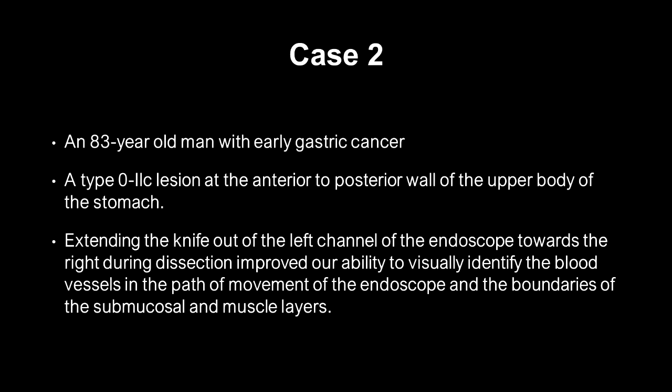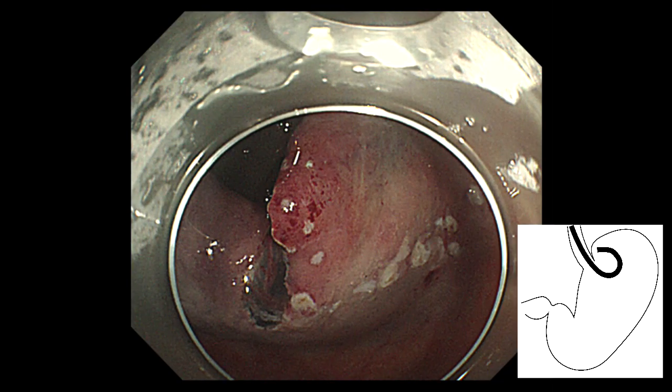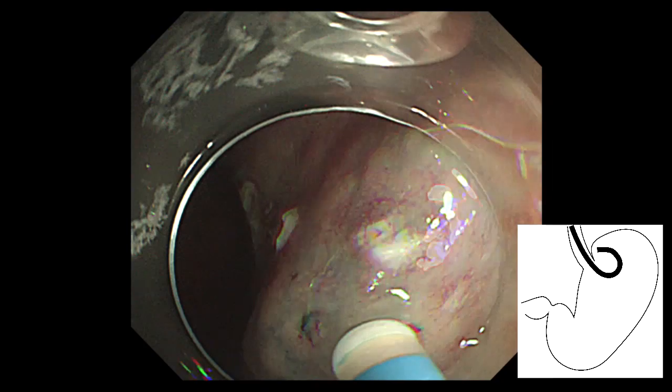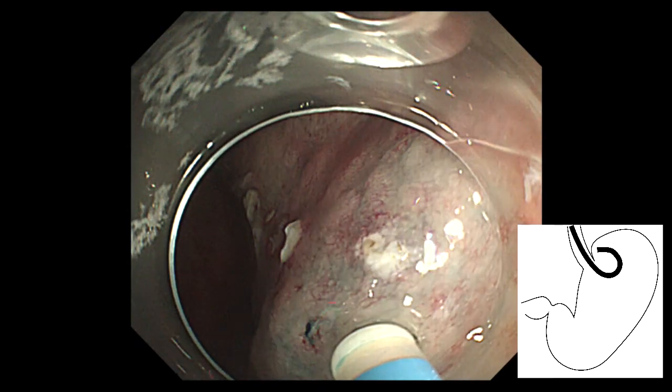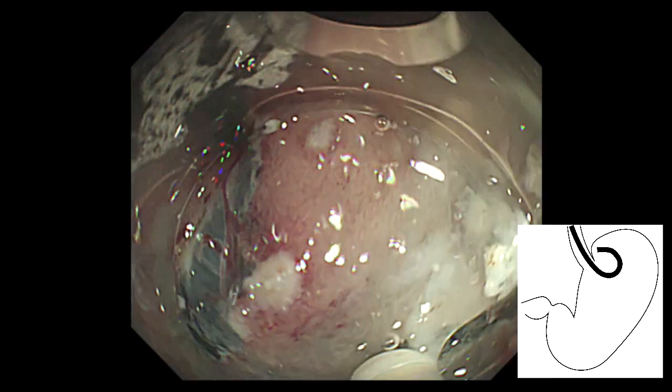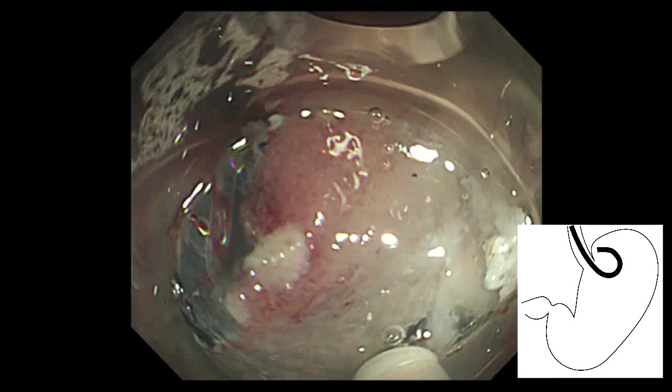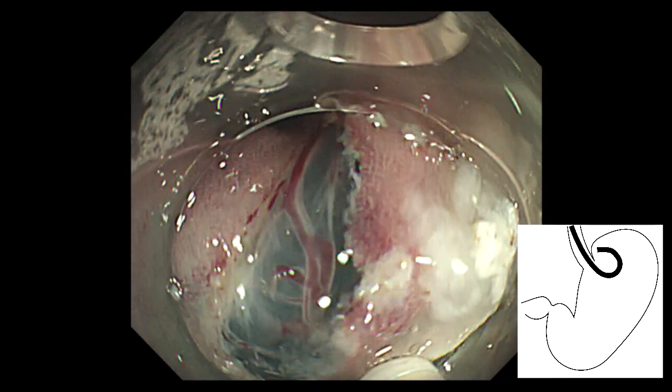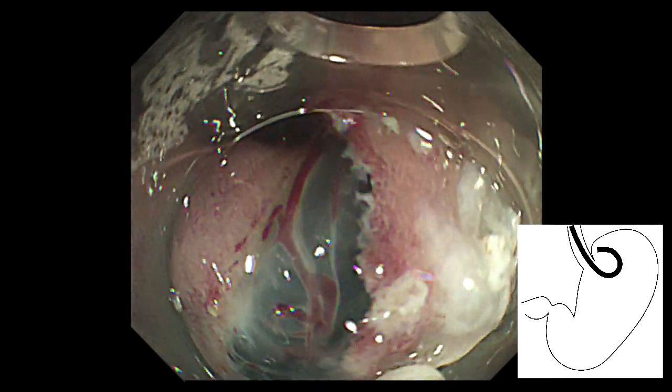Case 2. A type O2C lesion at the anterior to posterior wall of the upper body of the stomach. The incision on the fundus, which was the most difficult to access, was made possible by the multi-bend functionality of the endoscope, which enabled us to efficiently approach and treat the site.